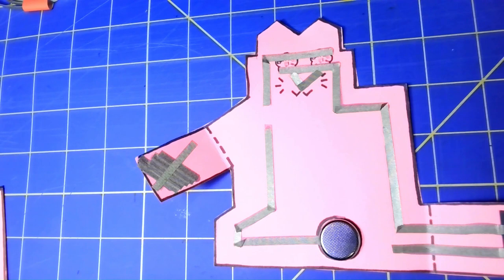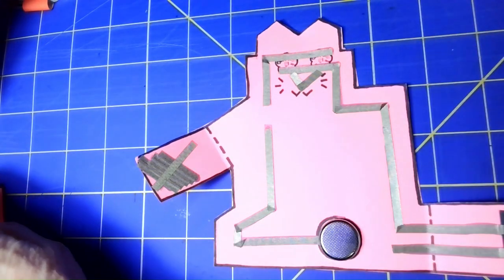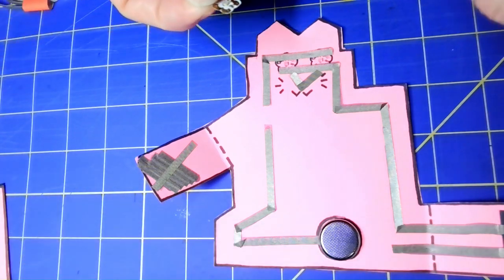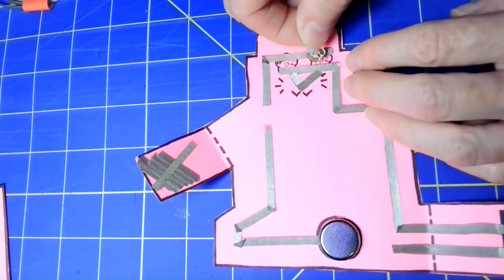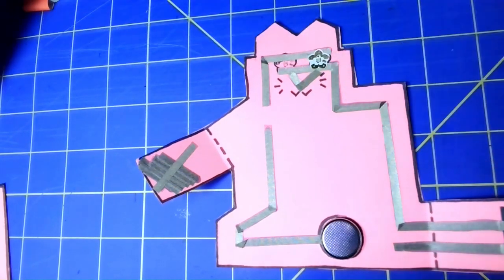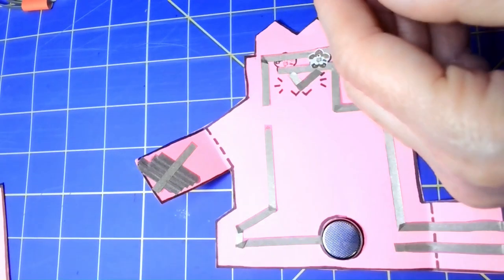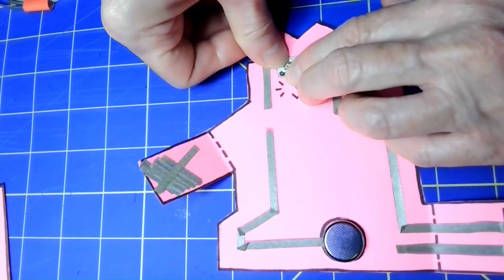I think our whole circuit's made and the last part is to get some circuit stickers. Look for that positive marking and make sure that is touching the positive side of the circuit.